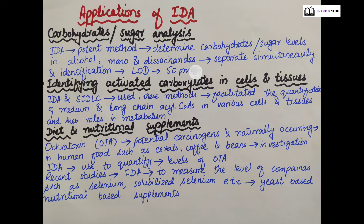Applications of IDA: The first application is analysis of carbohydrates and sugars. IDA is a potent method to determine carbohydrate and sugar levels in alcohol. Mono- and disaccharides can be simultaneously separated and identified with a detection limit of 50 ppm.